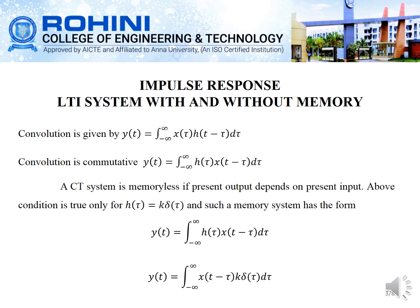The first topic is LTI systems with and without memory. The convolution of a continuous time signal is given by y(t) equal to the integral from minus infinity to infinity of x(tau) times h(t minus tau) d tau. Since convolution is commutative, y(t) can also be written as the integral from minus infinity to infinity of h(tau) times x(t minus tau) d tau.